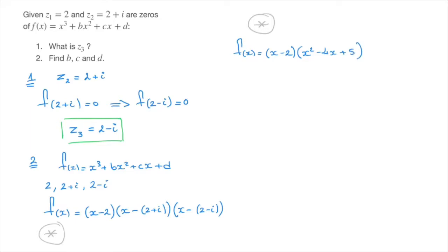And by all means, go ahead and press pause to check, but if you expand these last two parentheses, you should indeed get x squared minus 4x plus 5.